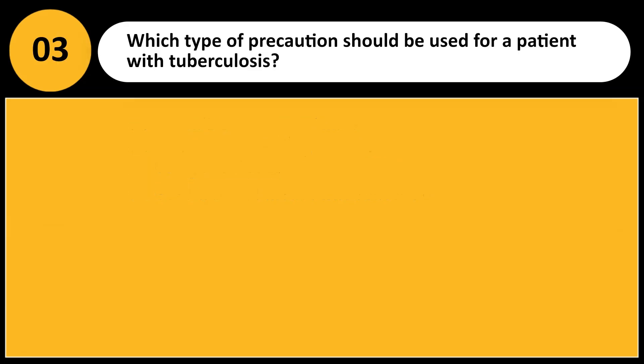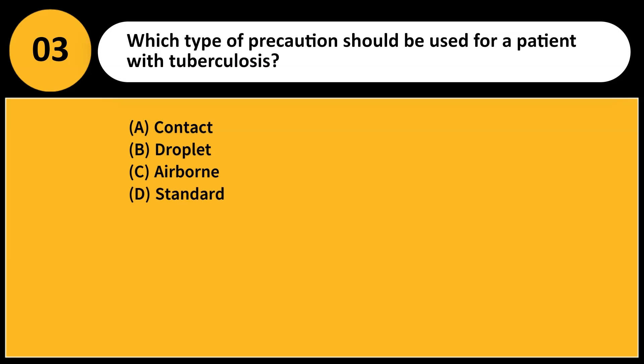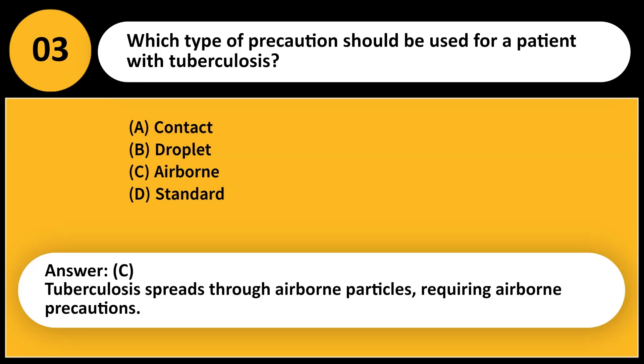Which type of precaution should be used for a patient with tuberculosis? A. Contact. B. Droplet. C. Airborne. D. Standard. Answer: C. Tuberculosis spreads through airborne particles, requiring airborne precautions.